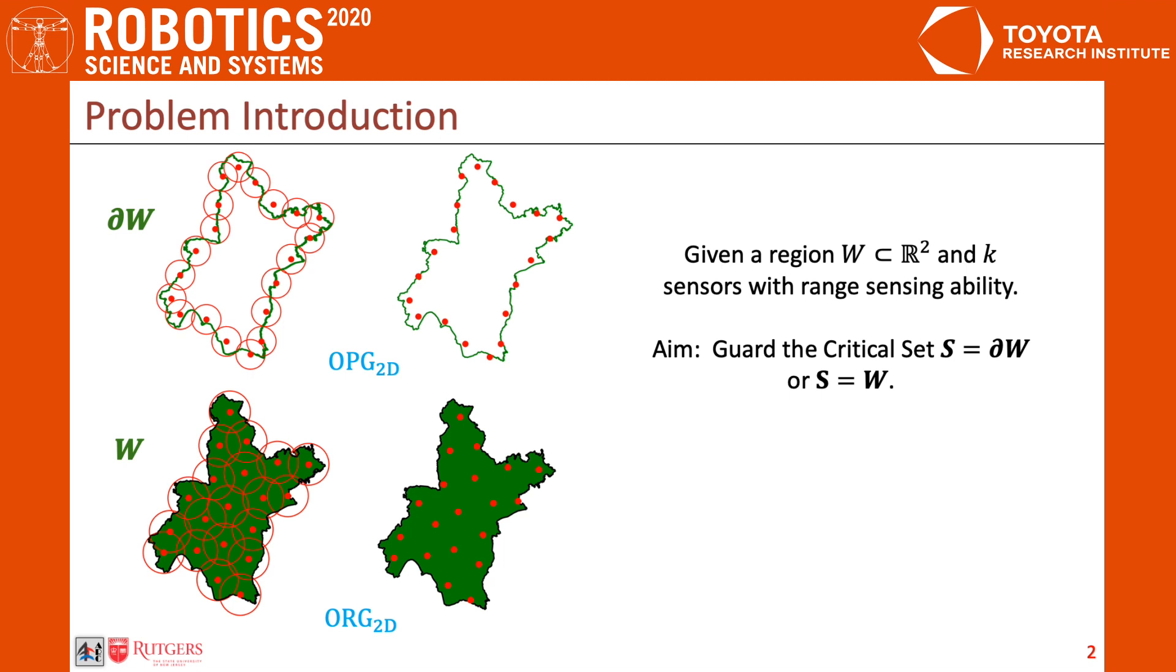The K mobile sensors can be placed anywhere on the plane. Every point in the critical set is guarded by the sensor nearest to it. Naturally we want to minimize the maximum distance from a point in the critical set to the sensor associated with it. In other words, we want to find the minimal radius such that there exists K circles of that radius that can cover the entire critical set.